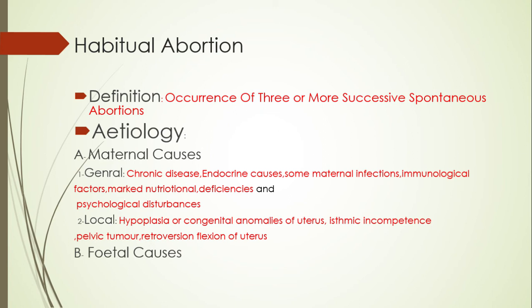Marked nutritional deficiency, dietetic deficiency, and psychological disturbances also cause habitual abortion. Local causes of habitual abortion mean there is a local anatomical or abnormal lesion in the genital tract, such as hypoplastic or congenital anomaly of the uterus, isthmic incompetence, pelvic tumor, retroversion or retroflexion of the uterus, and hypoplasia of the uterus.